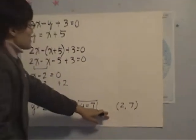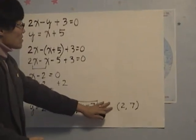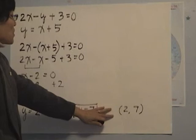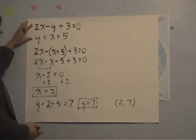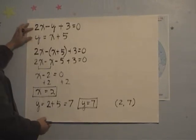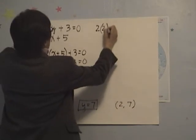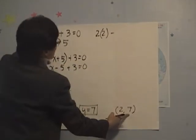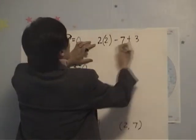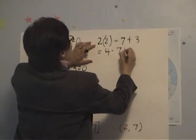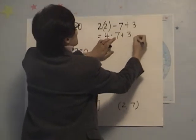Now, before you just go to the next examples, you want to make sure this solution is the right one. So what do we do? We want to substitute these values back to our original equations. So the first one, let's say, 2 times x, x is 2, minus 7, plus 3, equals 4 minus 7, plus 3, 4 plus 3, 7, negative 7, equals to 0, yes.